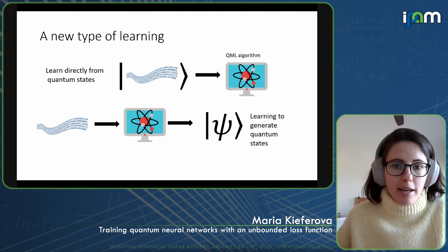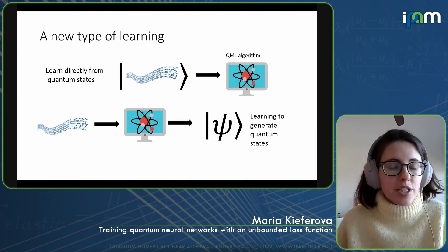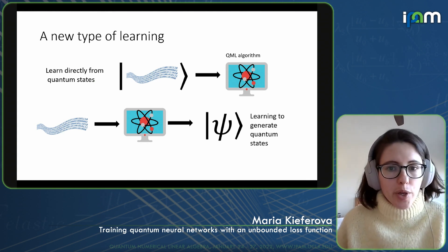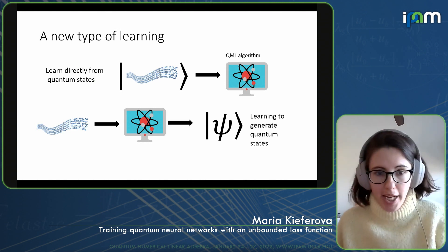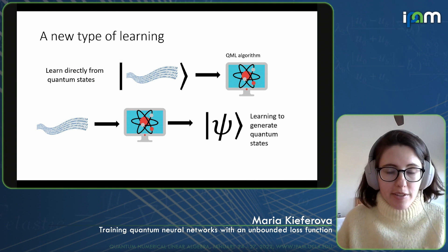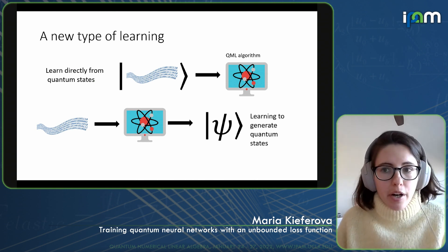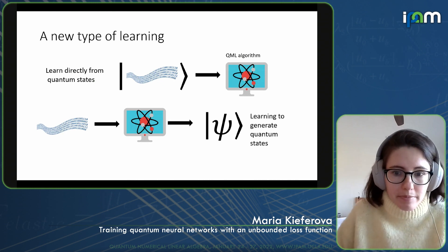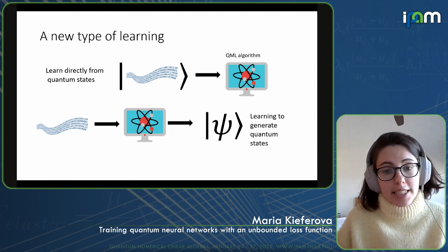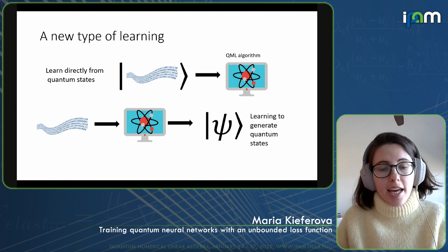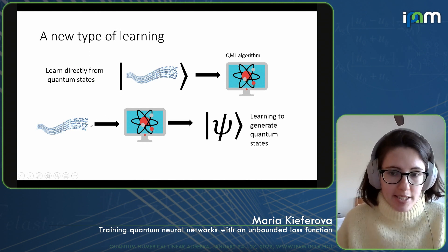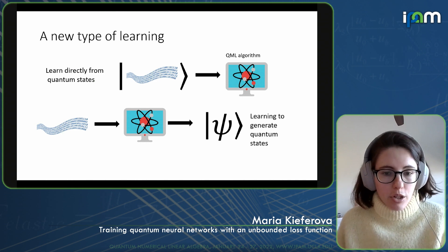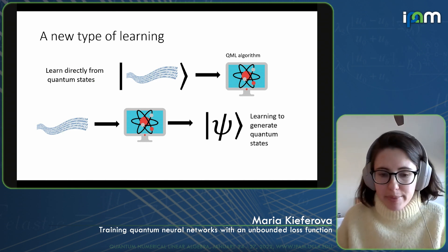What I find particularly interesting about quantum machine learning is that, unlike traditional machine learning approaches, we can learn directly from quantum states. We could have quantum information coming directly from a quantum computer and process it through a quantum machine learning algorithm — for example, an output of some linear solver or other algorithm using a lot of linear algebra. Similarly, we can take classical data, feed it into our quantum computer, and have the quantum computer learn how to generate some class of quantum states, which is not possible for classical computers.